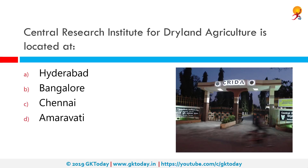Central Research Institute for Dryland Agriculture is located where? The correct answer is Hyderabad. The Central Research Institute for Dryland Agriculture, or CRIDA, is an institute under the Indian Council of Agricultural Research. It was formed in 1985 as the project directorate of the All India Coordinated Research Project for Dryland Agriculture.